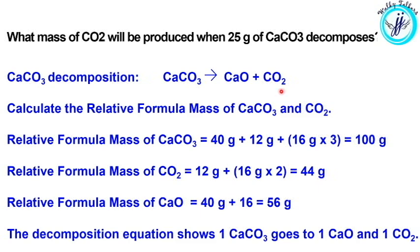To solve this, we need to find the relative formula mass of calcium carbonate and carbon dioxide. The relative formula mass of calcium carbonate is 100 grams, and that of carbon dioxide is 44 grams. The relative formula mass of calcium oxide is 56 grams.